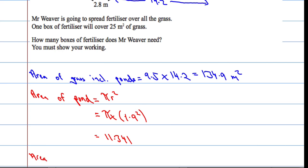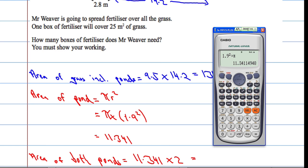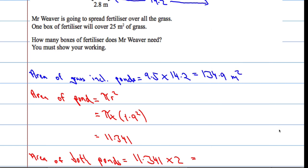11.341. So the area of both ponds equals 11.341 times by 2, which is going to give me 22.682.